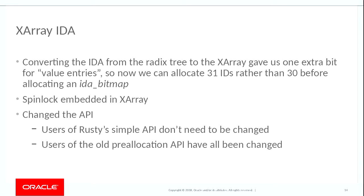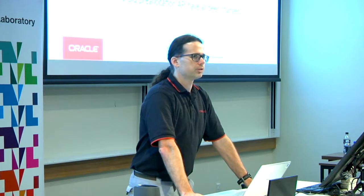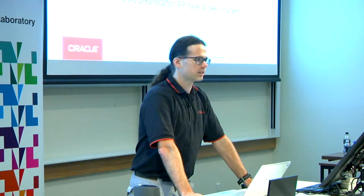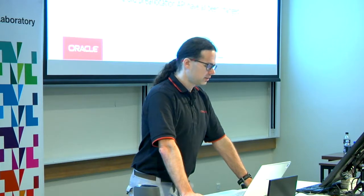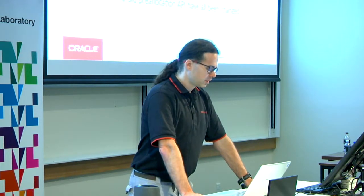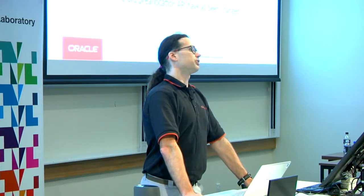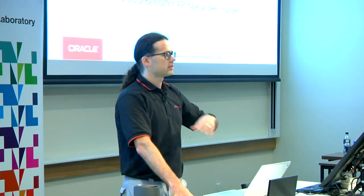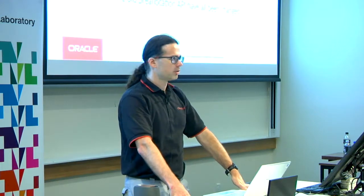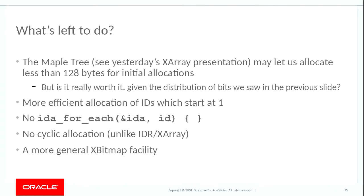I ended up getting rid of the old API that Tejun had put in — there were only seven users left and every single one got a little bit simpler by converting to the new API. My API is slightly simpler than Rusty's; I ended up re-implementing Rusty's simple API on top of my simple API, which is now just the API. The pre-allocation API is gone — you tell the IDA what GFP flags it should use and it takes care of all the locking for you.